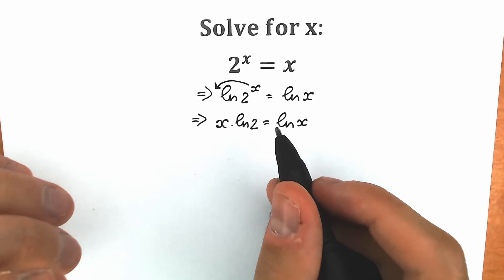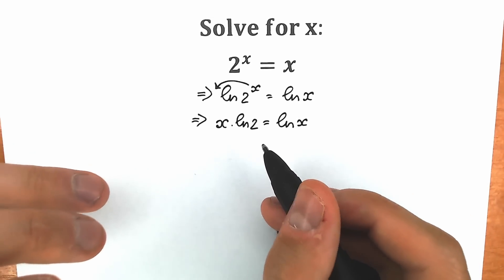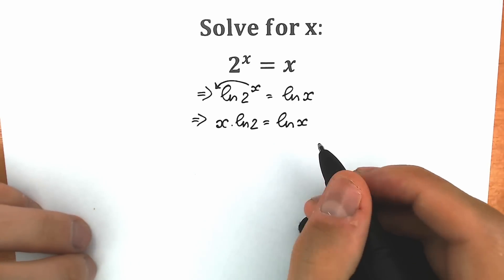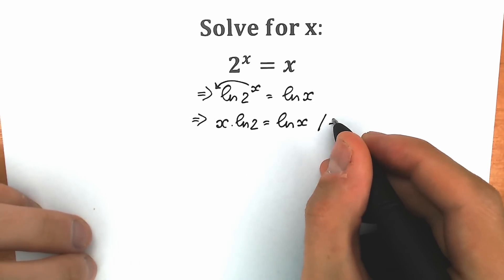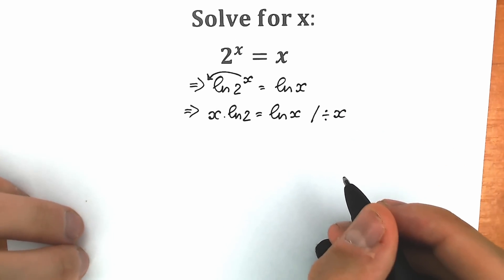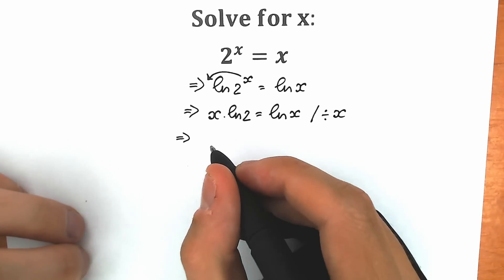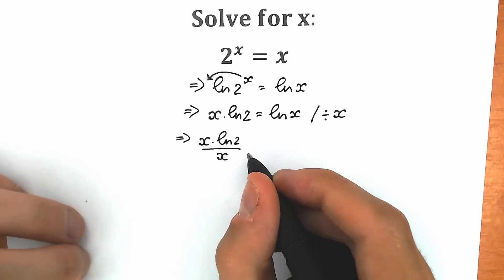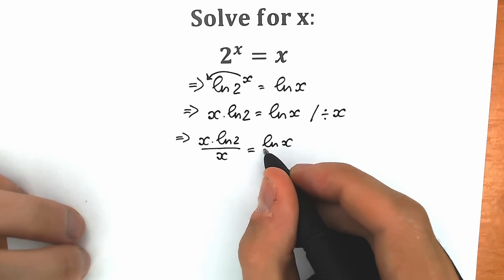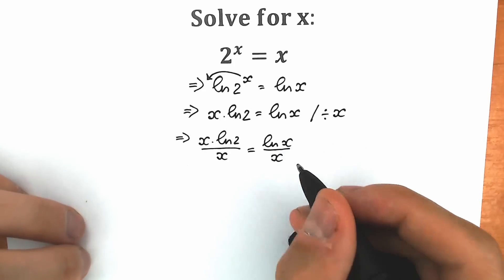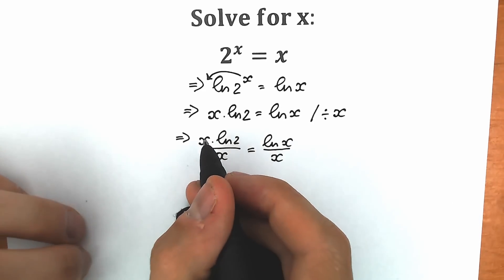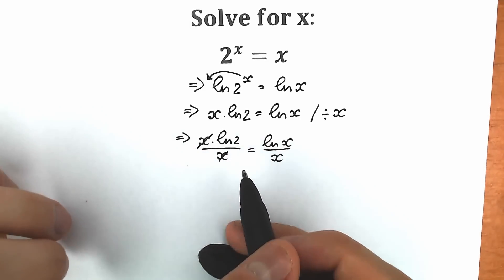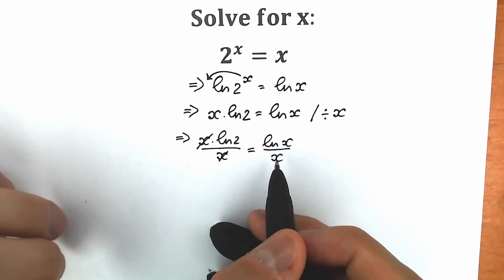Right now let's try to group our constant and our variable. Our constant goes on the right side, since we prefer variables on the left side. For this step, let's divide both sides by x. On the left side, we have x times natural log 2; when we divide by x, we can easily cancel this x, and we have only natural log 2 on the left side. On the right side, we have natural log x over x.